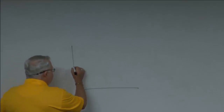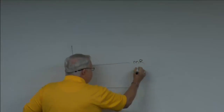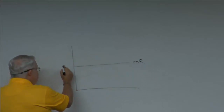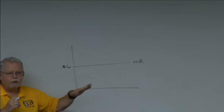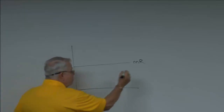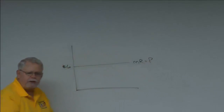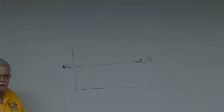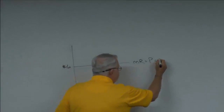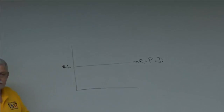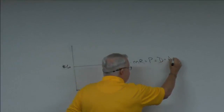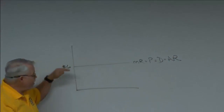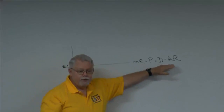If the marginal revenue curve is flat, it says that every time you sell something you get the same extra money — in other words, your price is constant. For that reason, the marginal revenue curve is also the same thing as the price line. The price line is simply another word for the demand curve, and another term frequently used is average revenue. When this curve is flat, all of those are the same.